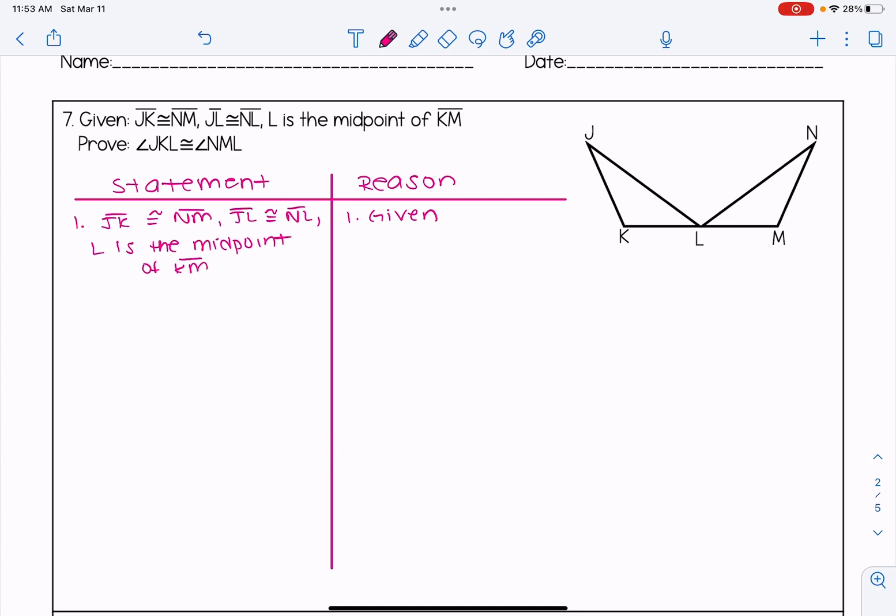So if we look at question seven here, I've already gone ahead and set up the two columns and written the givens. It tells us that JK and NM are congruent. I'm going to mark those off in my diagram. JL and NL are congruent. I will mark those off. And we know that L is the midpoint of KM. We're asked to prove that angle JKL and angle NML are congruent to one another.